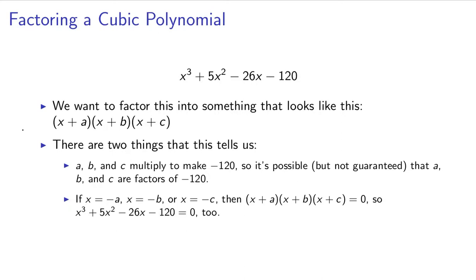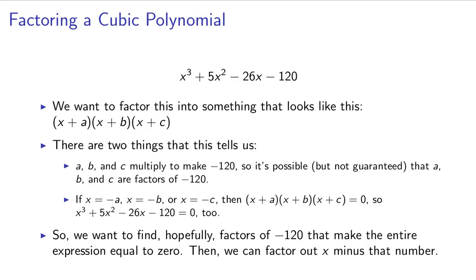Now, this next thing, this is definitely true. Not just possible, but definitely true. If x is negative a, negative b, or negative c, then this piece has to equal zero. And since this is equal to this, this piece has to equal zero. So that means that we can combine these two things together and figure out what factors of negative 120 make the entire expression equal to zero. Because if we have something that makes the entire expression equal to zero, then we can factor out x minus that number.